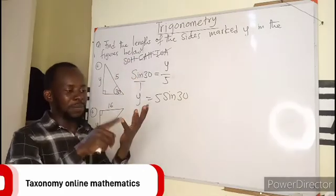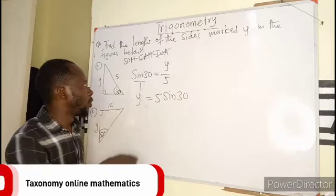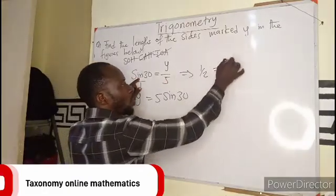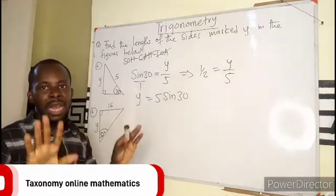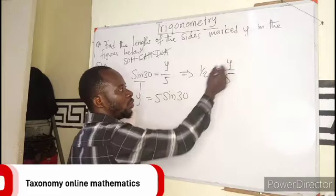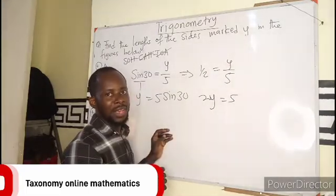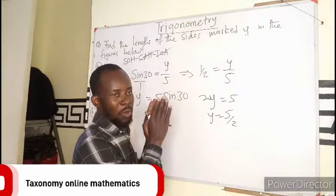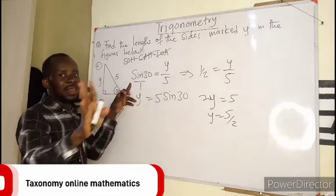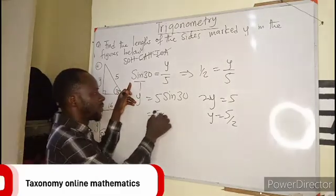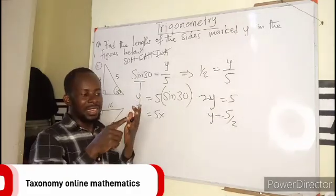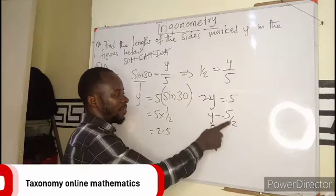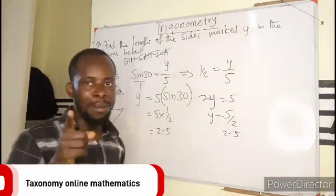Let's check. We know that sine 30 is 1 over 2. So I can say 1 over 2 equals Y over 5. If I cross multiply, it will be 2Y equals 5. We can divide this, Y equals 5 over 2. That is the actual way it is supposed to go. I can still say 5 times sine 30, which is 1 over 2, and half of 5 is 2.5. 5 divided by 2 is 2.5.